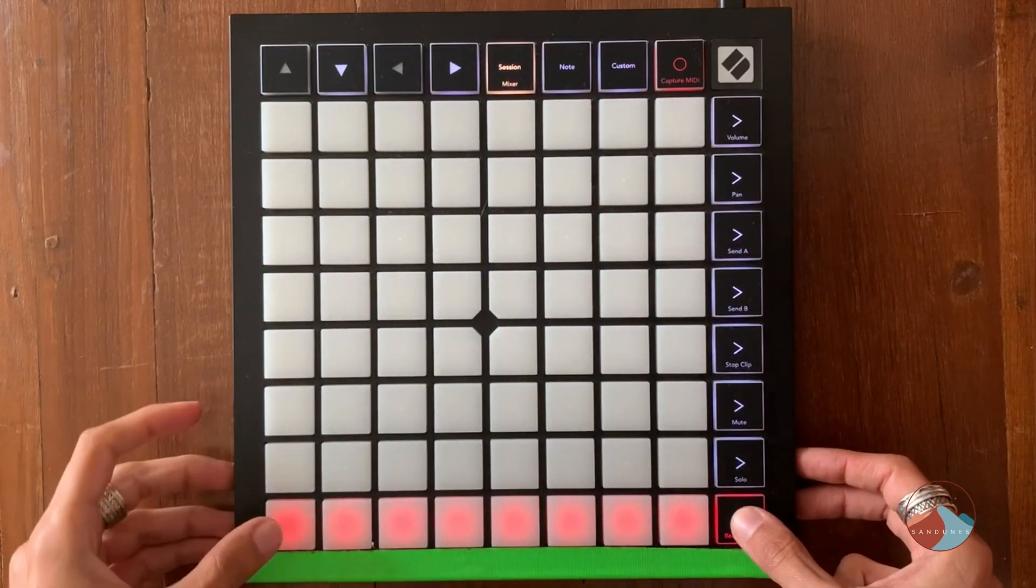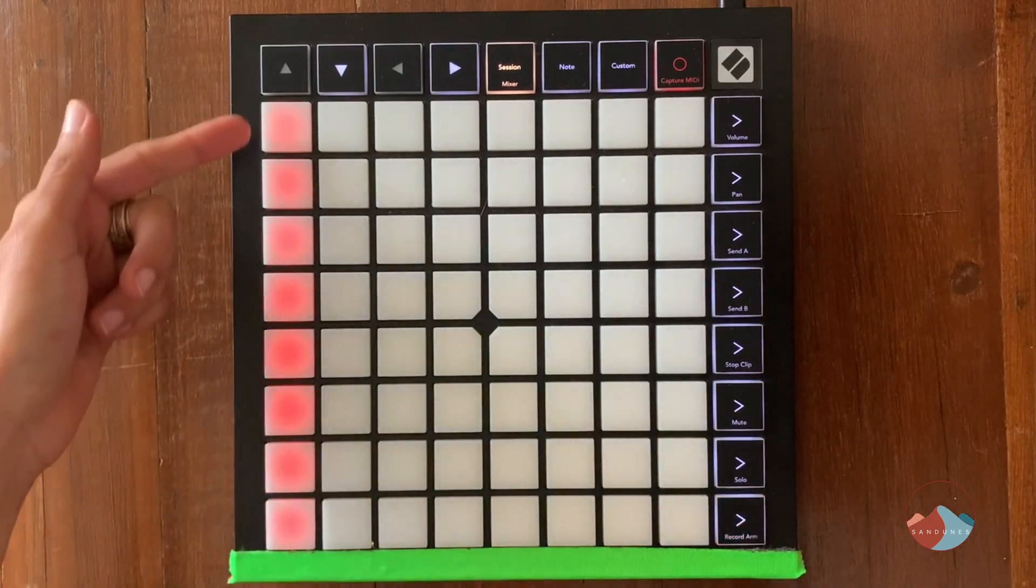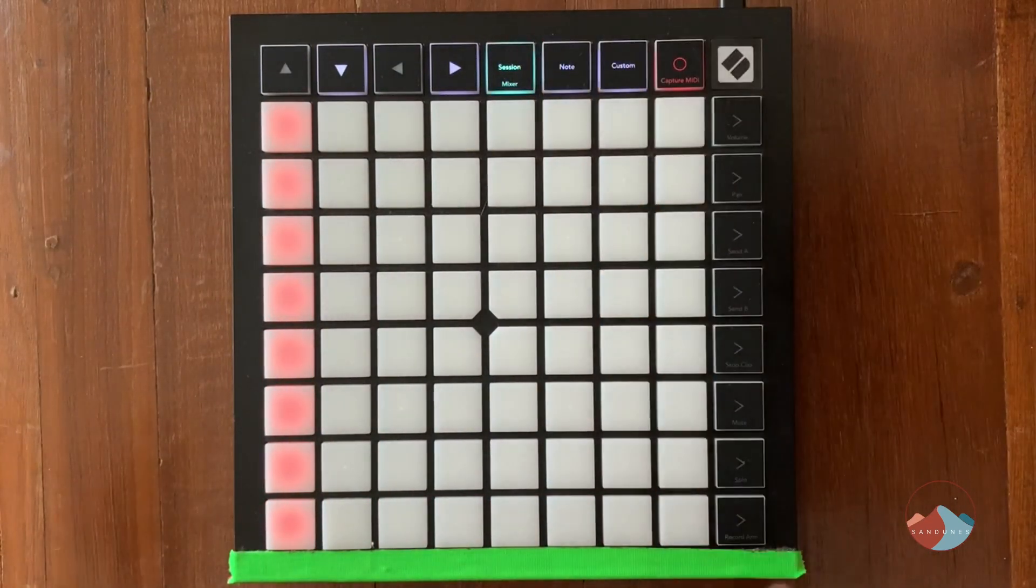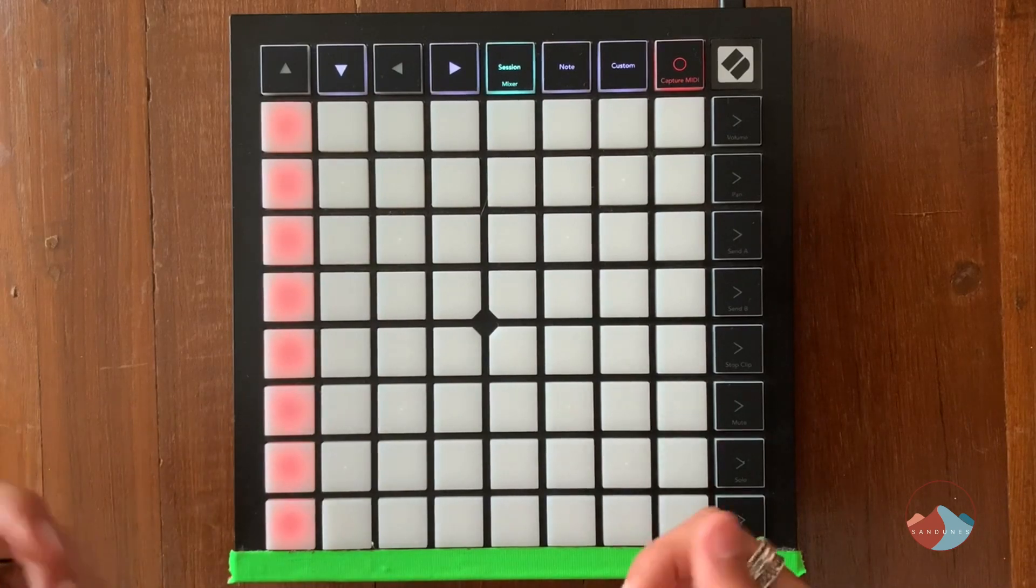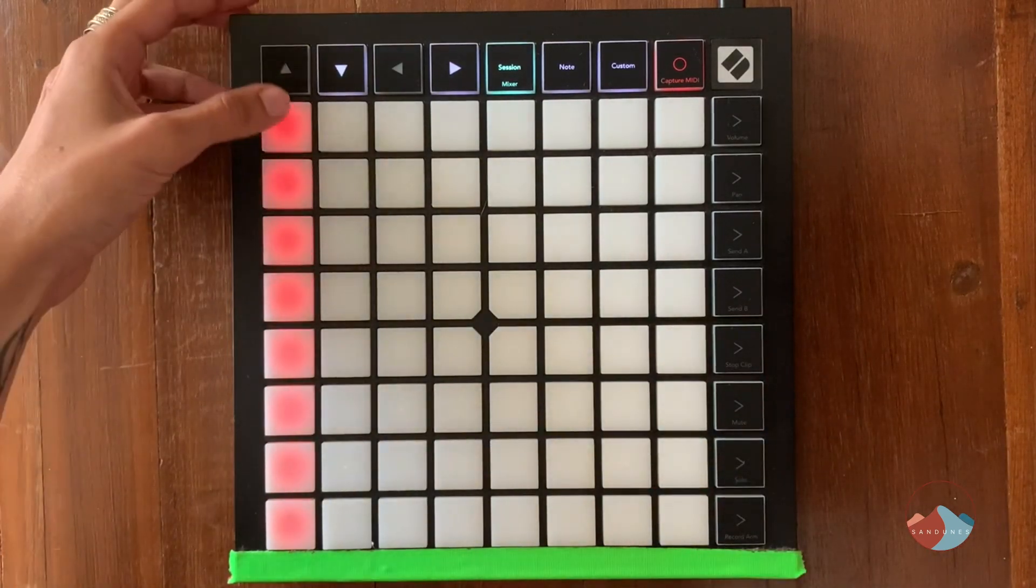I do that by holding down the button on the bottom right. You can see I'm in record arm mode and now I can record a clip into the session view. I often loop a groove as a starting point when I'm building a track.